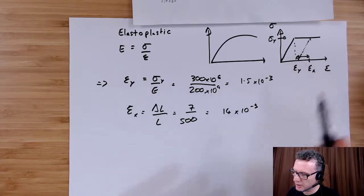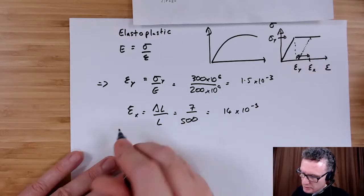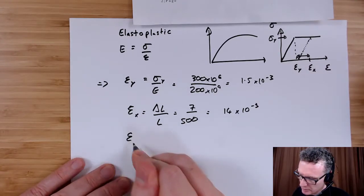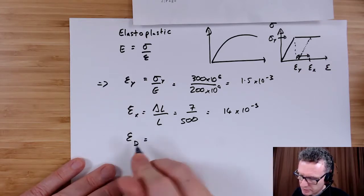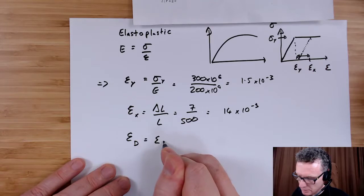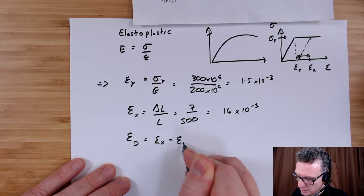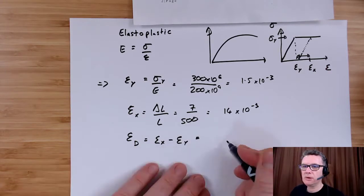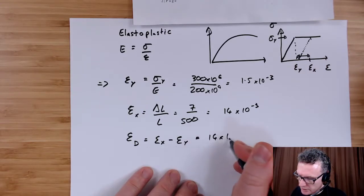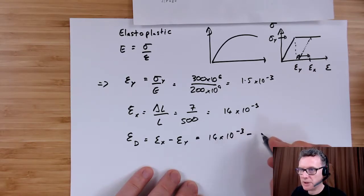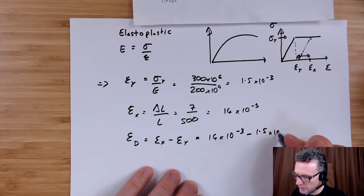Okay, so let's work out what this distance is from here to here, and I'll call that d-difference. Okay, so that's 14 times 10 to the minus 3 take away 1.5 times 10 to the minus 3.